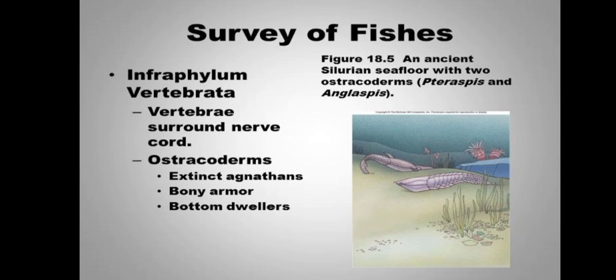The next infraphylum is Vertebrata. We have discussed class Myxini under Hyperotreti. Vertebrata is most importantly characterized by vertebrae present which surround the nerve cord. Another deviant class is Astracoderms, which belong to infraphylum Vertebrata.